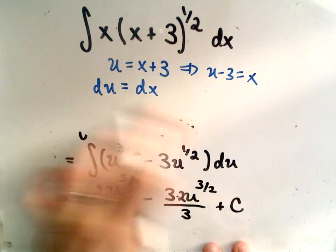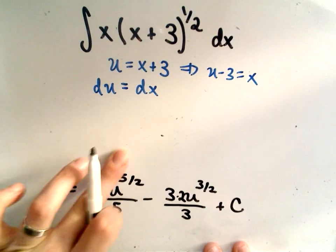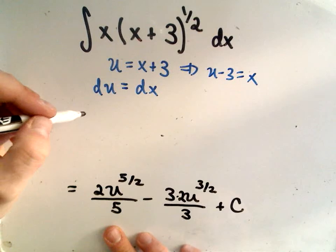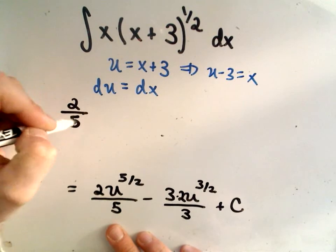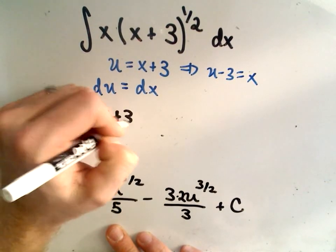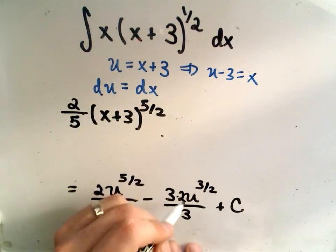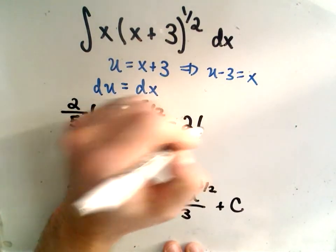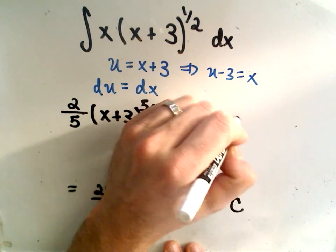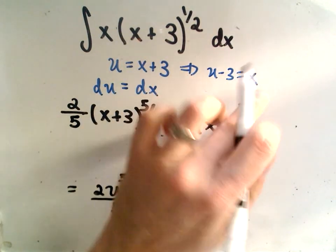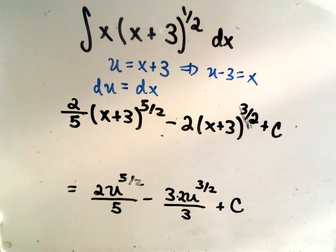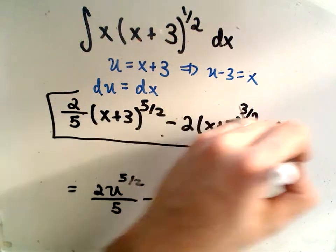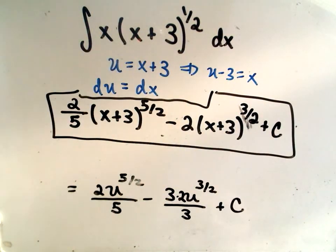Now it's just a matter of simplifying and plugging back in your substitution. We're going to get 2-fifths, u is (x+3) to the five-halves. Here the threes will cancel, so we'll get minus 2u, which is (x+3) raised to the three-halves power, plus C. And that'll be our answer: 2/5(x+3)^(5/2) minus 2(x+3)^(3/2) plus C.